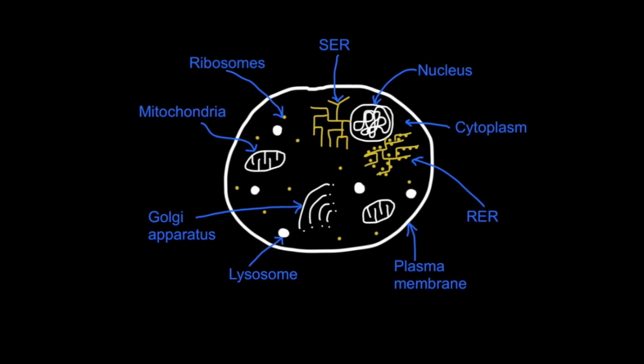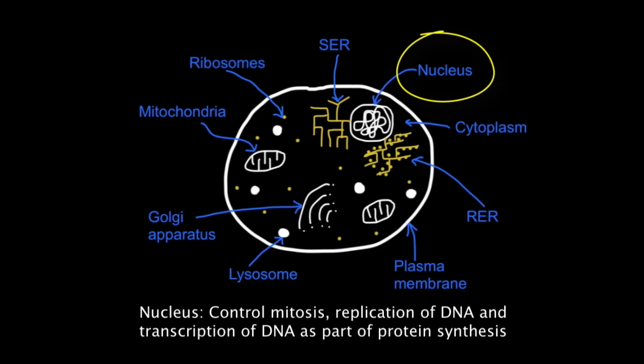The other organelles are membrane-bound. A eukaryotic cell has a nucleus, which controls the cell's activities including mitosis, DNA replication, and DNA transcription as part of protein synthesis.